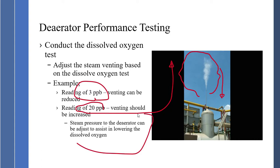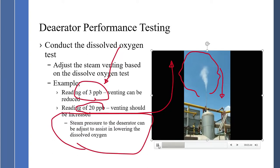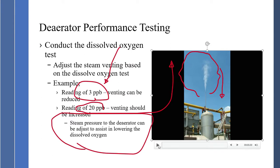The other thing you can do is adjust the steam pressure. People say the deaerator should operate at 5 psi, some say 8 psi, others say 12 psi. What is the correct pressure? The correct pressure is whatever achieves below 7 parts per billion. So I can adjust pressure and venting to make sure I achieve 7 parts per billion or below. In one case, venting was too aggressive — it was reduced, and a good amount of energy savings was accomplished.